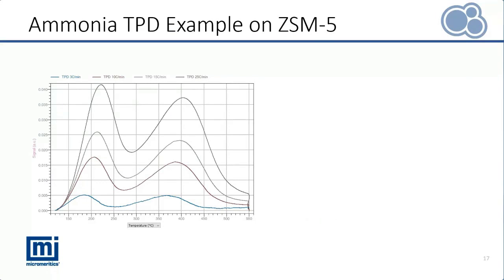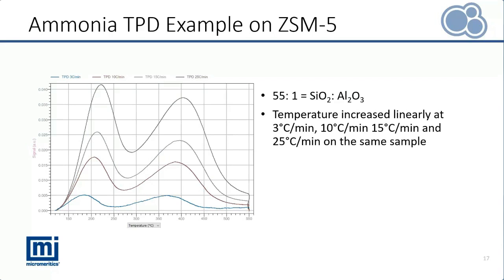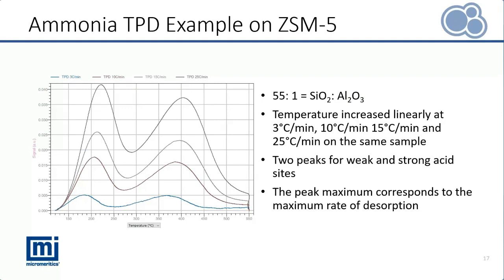Here is an example of an ammonia TPD. The graph shown is signal versus temperature. The silica alumina ratio of the ZSM-5 was 55 to 1. The ramping rates used were 3, 10, 15, and 25 degrees Celsius per minute. These TPDs with different ramping rates were performed consecutively on the same sample. Here you can see the two peaks for the weak and strong acid sites. From top to bottom, the TCD signal goes from 25 degrees C per minute ramp to 3 degrees C per minute ramp in order of decreasing ramp rate, since the peak maximum corresponds to the maximum rate of desorption.